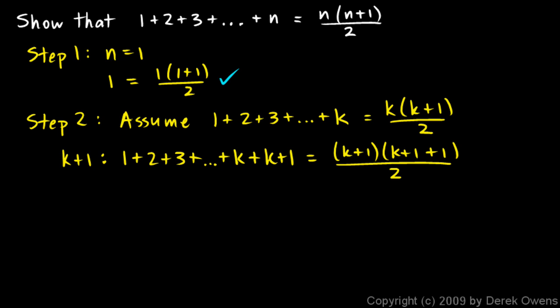Now the trick here is to notice that 1 plus 2 plus 3 on up to k is the same as this, and this is equal to that. So I'm going to take this and substitute it in right there. I'm going to rewrite the left side now, but instead of this piece that's underlined, I'm going to put in that. So I have k times k plus 1 over 2, and then I still have plus k plus 1 right there.